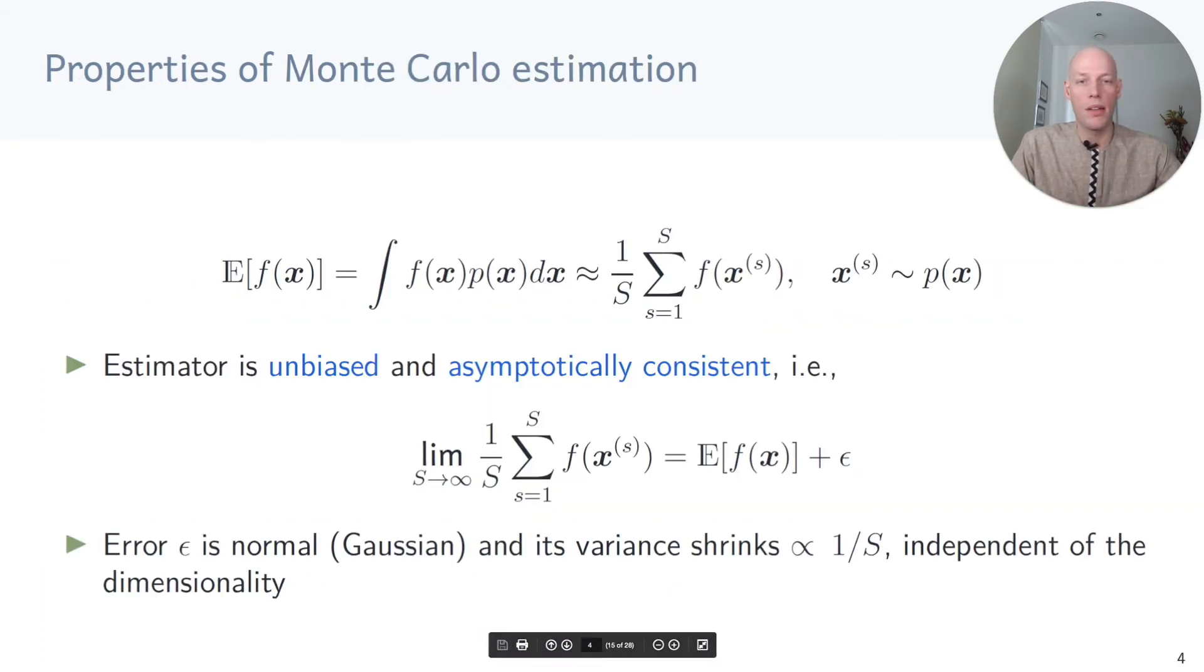Monte Carlo estimation has some nice properties. The estimator is unbiased and asymptotically consistent. That means if we sample long enough, the estimator tends to the true expected value, plus an error term. And that error term is Gaussian and its variance shrinks linearly with the number of samples, independent of the dimensionality. Overall, Monte Carlo estimation gives us the right answer if we sample long enough.